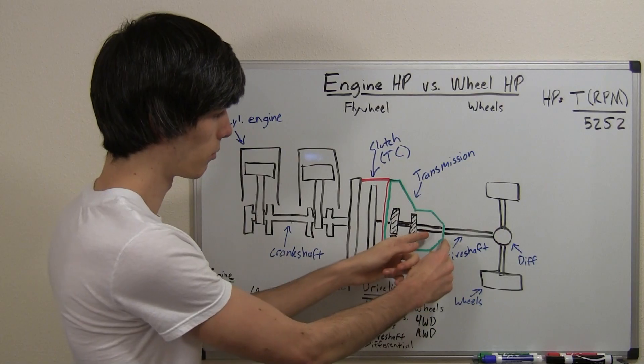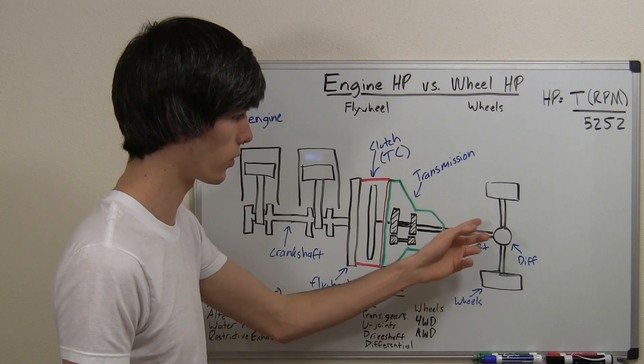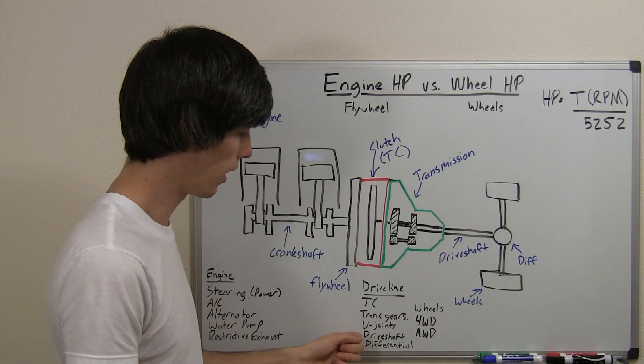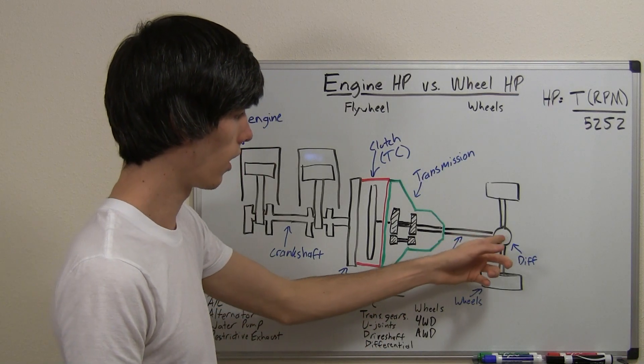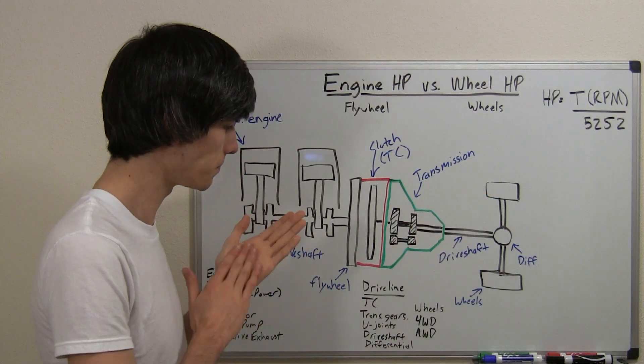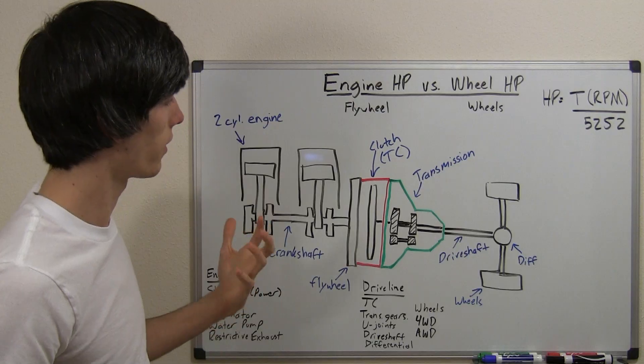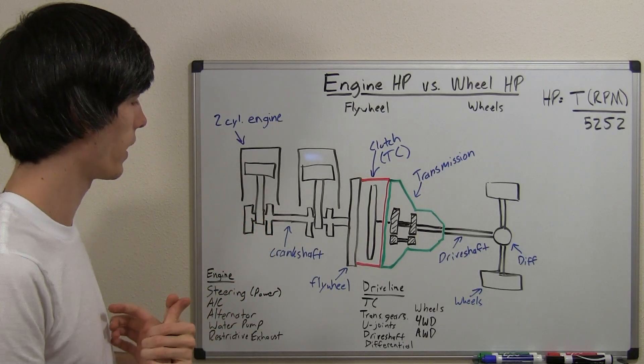You've got U-joints between your transmission and your driveshaft, and your driveshaft and your differential. You've got friction within your differential. You've got friction going out to the wheels. And so all of this friction means that you're going to lose some of that engine horsepower.